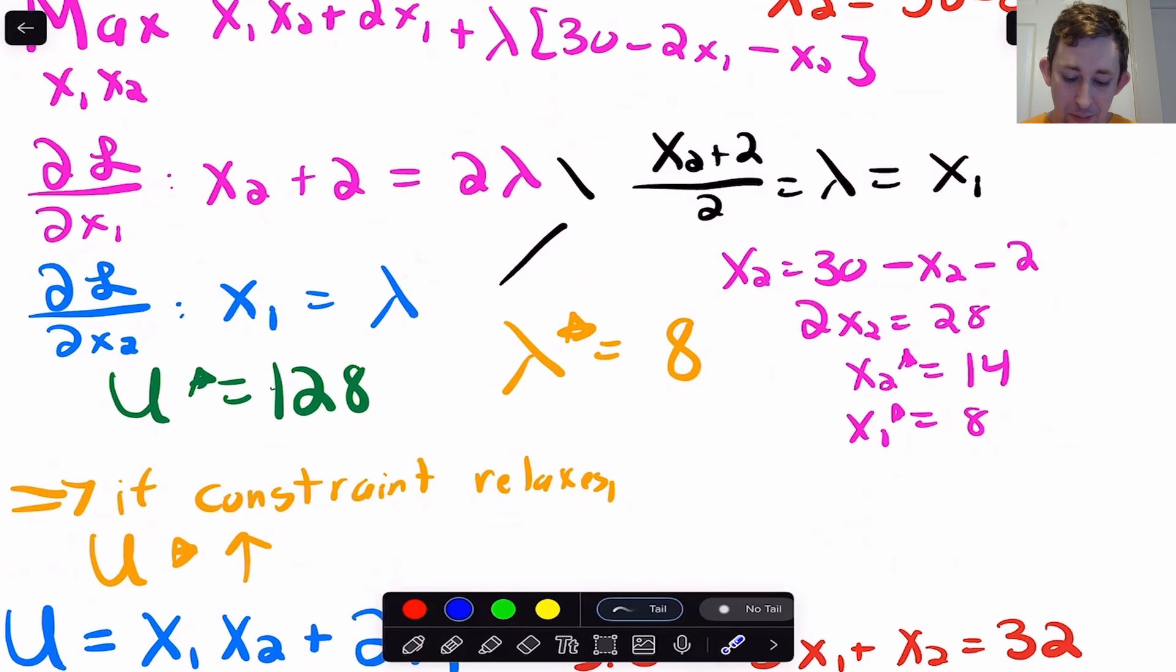My utility when I plug in my optimal x1 and my optimal x2 comes out to be 128. Now we've said before that this is positive, which means that if I give Bill an extra dollar, his utility should go up. Specifically, it sort of says that for every dollar I give Bill, his utility should go up by about eight. So let's just test that. Let's just take this budget constraint where we said we had $30, and maybe we can increase it to $31 and see what happens to Bill's utility.